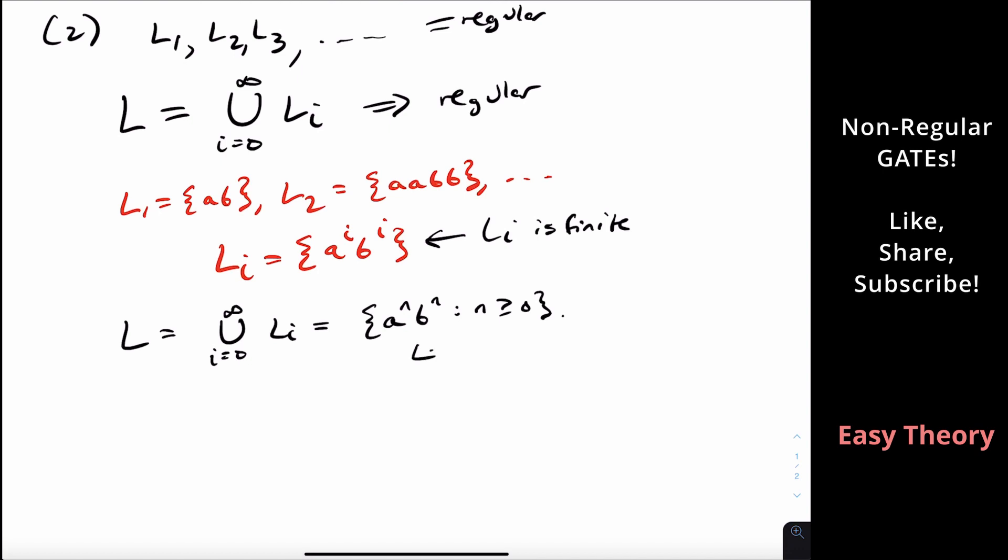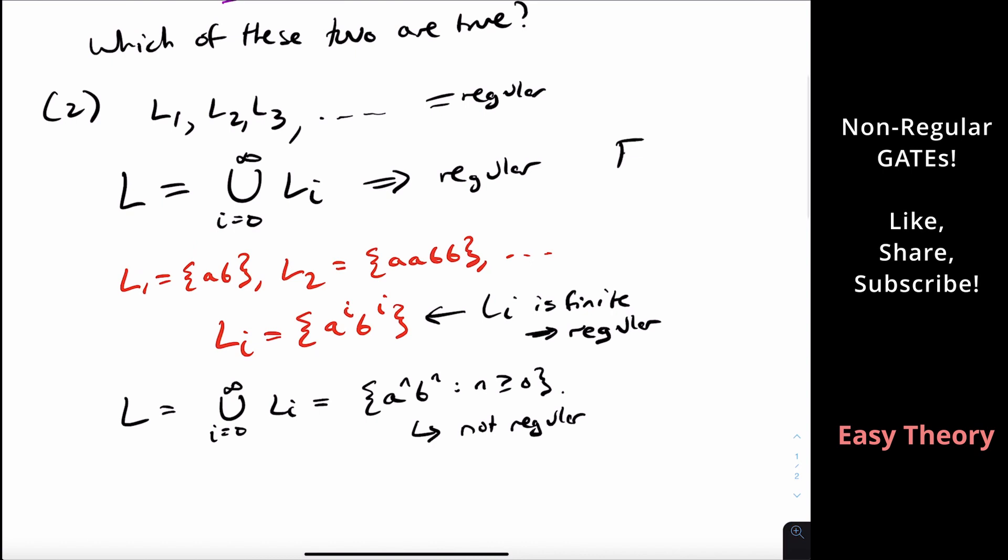We know this is the canonical non-regular language, so this is not regular. But since each Li is finite, finite languages are always regular because we can always make an NFA for them. So this statement is false.